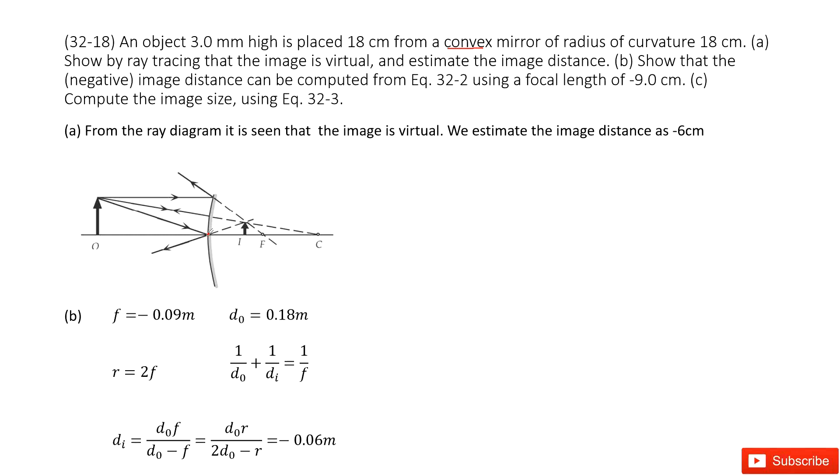Second one shows that the negative image distance can be computed. The focal length is negative 9 centimeters. And also we know the object distance d₀ is 0.18 meters.